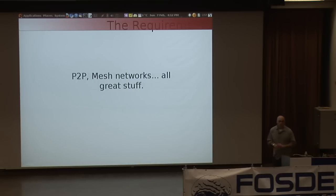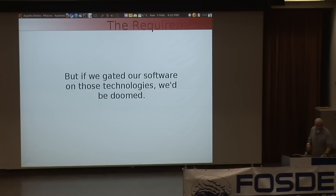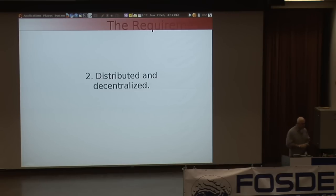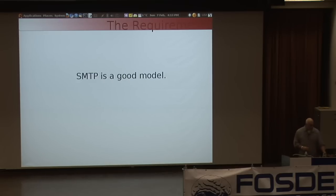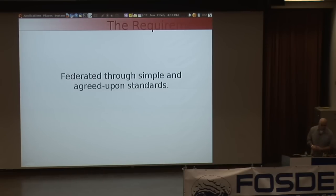P2P mesh networks are awesome. I'm really looking forward to when we have a P2P mesh network going on. But if we are going to wait to participate in innovation on the social web until we've got the P2P mesh utopia, we're doomed. That's a long way down the line. However, I do think the way we can be participating in this social web is by providing the piece that is distributed and decentralized. SMTP is a good model of how a social web can work that is distributed and decentralized. We form natural groups around workplaces, areas of interest, geography, or your ISP. And these networks are federated through simple, agreed-upon standards.